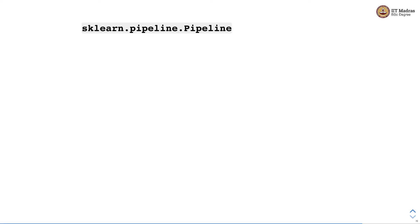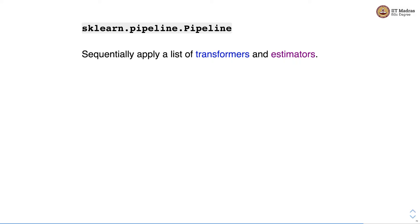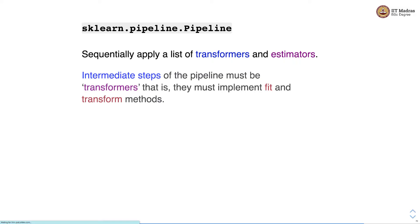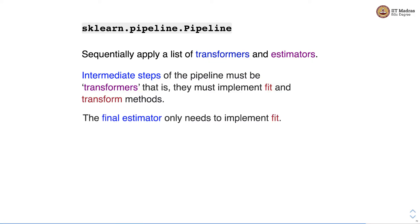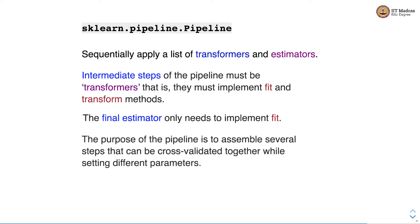The pipeline API sequentially applies a list of transformers and estimators. The intermediate steps of the pipeline must be transformers — that is, they must implement fit and transform methods. The final estimator only needs to implement fit. The purpose of the pipeline is to assemble several steps that can be cross-validated together while setting different parameters.